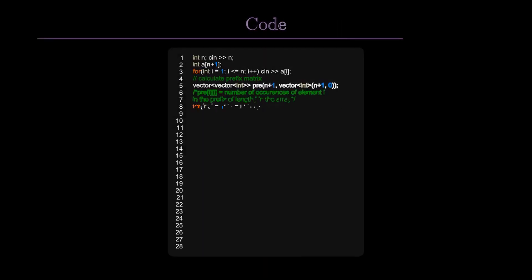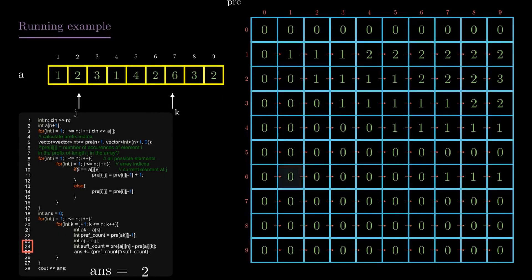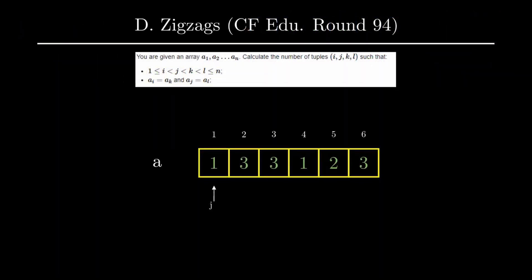Hello everyone, today we are going to solve problem B Zigzags from CodeForces Educational Round 94. The problem statement is very short: we are given an array a1 through an and we have to calculate the number of tuples i, j, k, l such that two conditions are satisfied. The outline of the video is: first we'll see the approach, then the code, and then a running example on a test case.